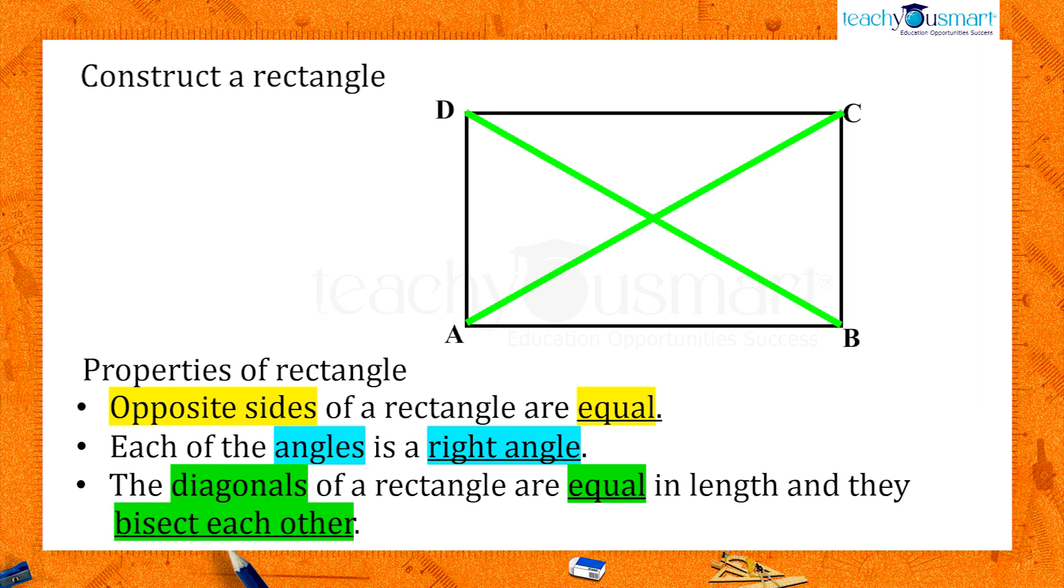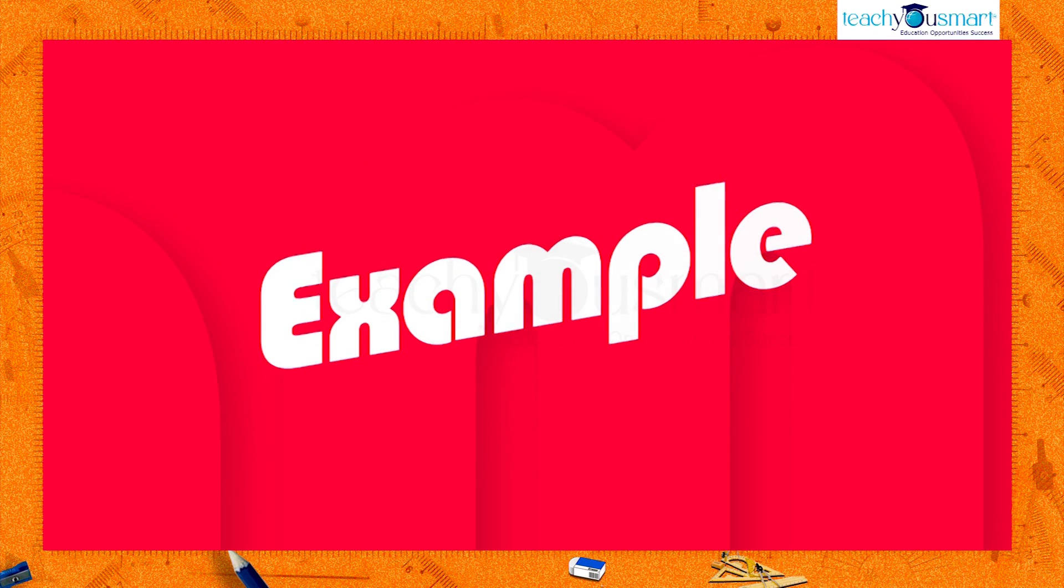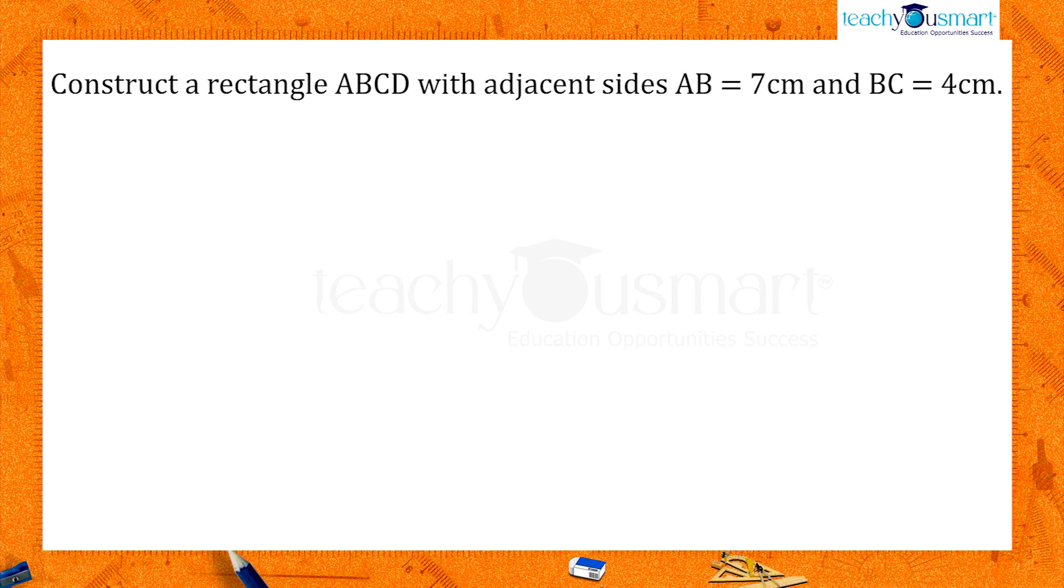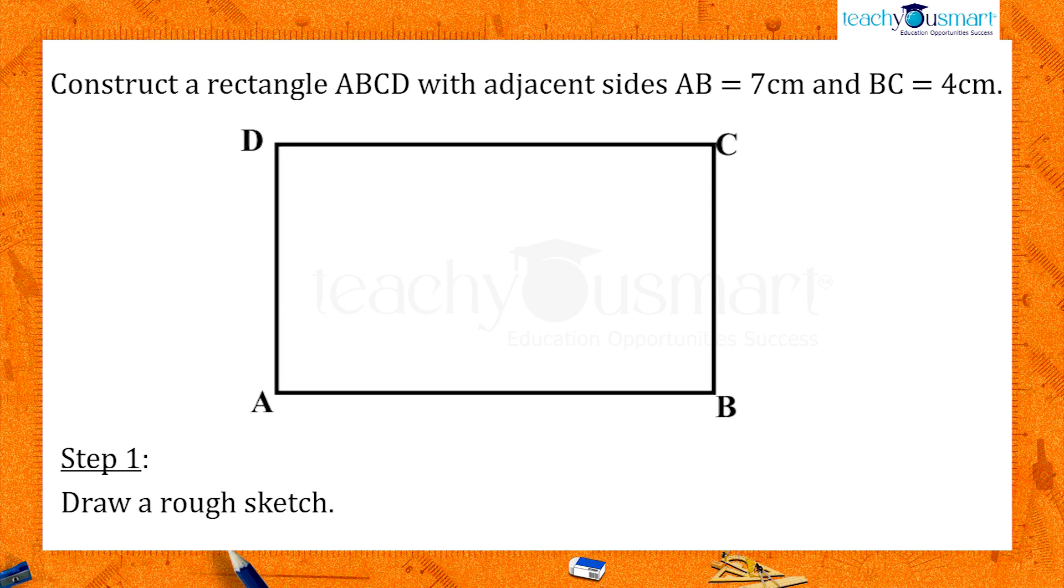Let's see how we can use these properties in the construction of a rectangle through an example. Construct a rectangle ABCD with adjacent sides AB equals 7 cm and BC equals 4 cm. Before the construction, let's draw a rough sketch of rectangle ABCD with AB equals 7 cm and BC equals 4 cm.